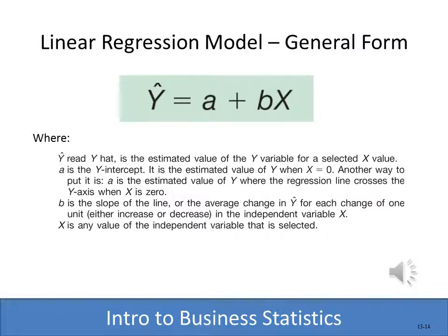The linear regression equation: y-hat is the predicted value of y, the dependent variable — such as the number of copiers sold. Y-hat equals a, the intercept, which is the value of y when x equals 0. With the copier example, if we make no sales calls at all, how many copiers can we expect to sell? That's the intercept. Then we add the slope — how much y increases for each increase in x — multiplied by x, the independent variable.